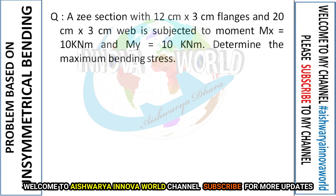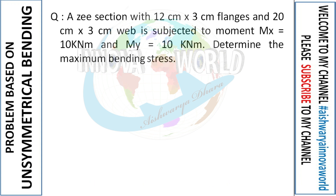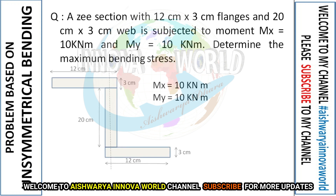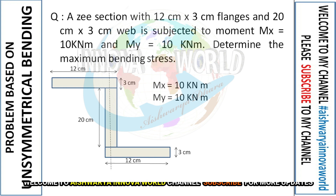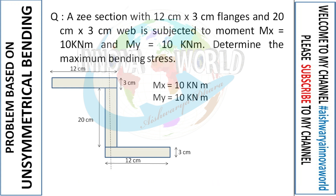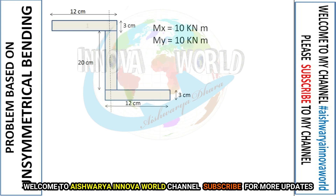The I-section has 12 cm × 3 cm flanges and a 20 cm × 3 cm web. It is subjected to moments Mx = 10 kN·m and My = 10 kN·m. We need to determine the maximum bending stress. The figure is drawn as shown on screen with the flanges as 12×3 cm and the web as 20×3 cm.